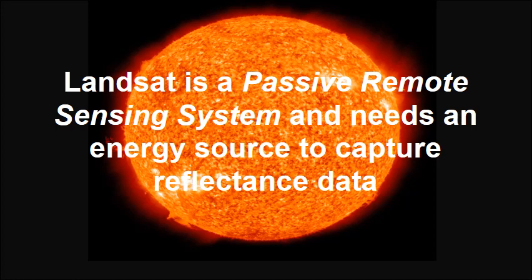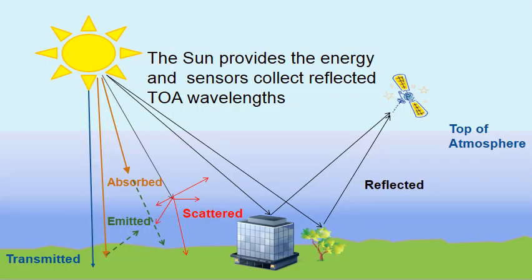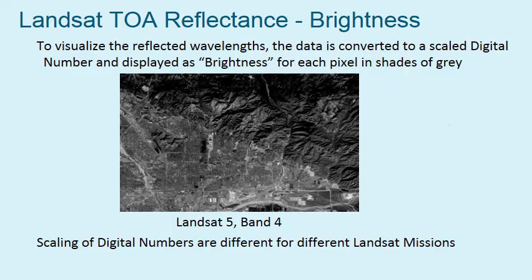Landsat is a passive remote sensing system and needs an energy source to capture reflectance data. The sun provides that energy and sensors collect the reflected top of atmosphere wavelengths. To visualize those reflected wavelengths, the data is converted to a scaled digital number and displayed as brightness for each pixel in shades of grey. This is an example of Landsat 5 and its band 4.